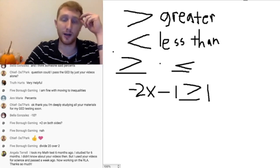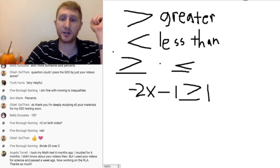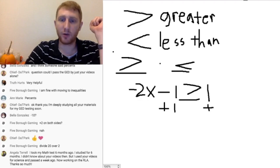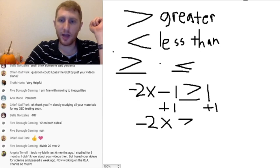So if this was an equal to sign and we needed to solve for x, we'd add 1 to both sides of our equation, and rewrite this as negative 2x is greater than or equal to 2.